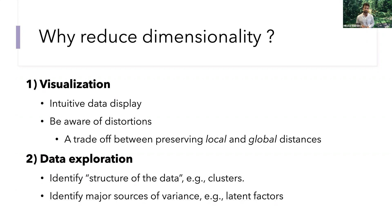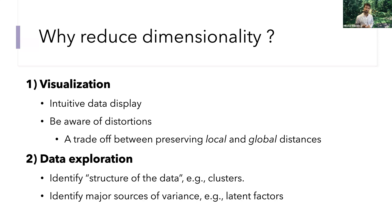As we visualize high-dimensional data, we have to be aware that distortions may occur, as was the case projecting a sphere into a 2D plane. Different methods offer trade-offs: some preserve local distances in high-dimensional space while introducing distortions at global distances, while other methods are good at capturing global distances but distort local distances. These distortions depend on the type of method used.